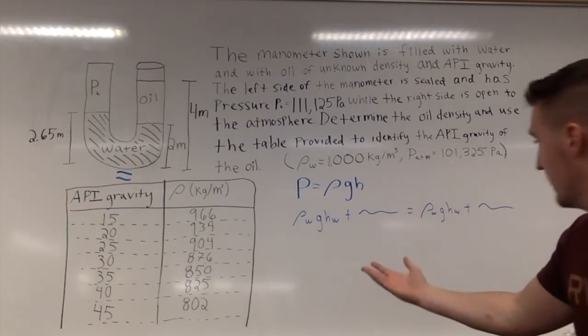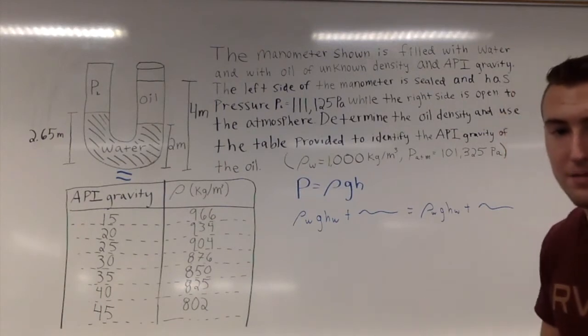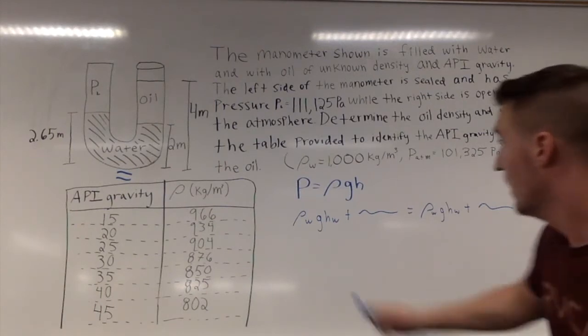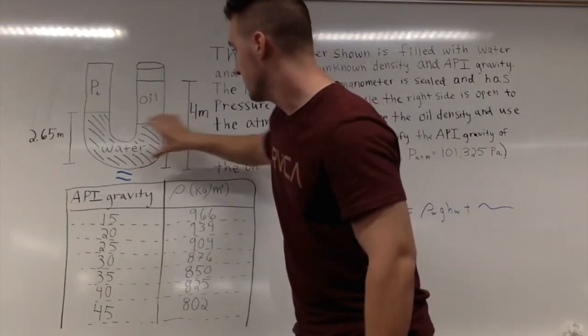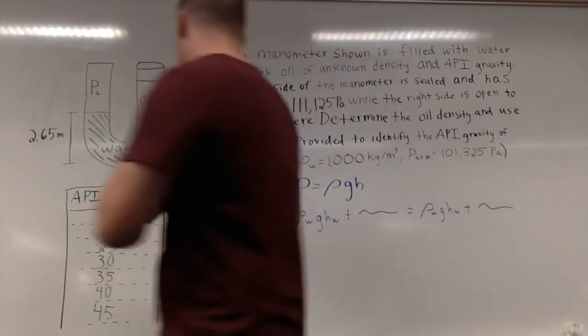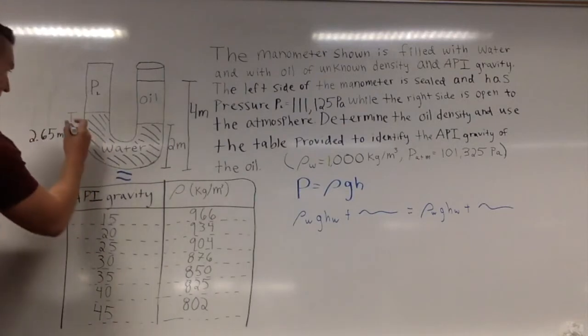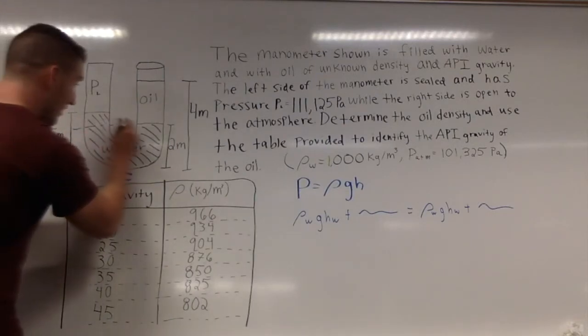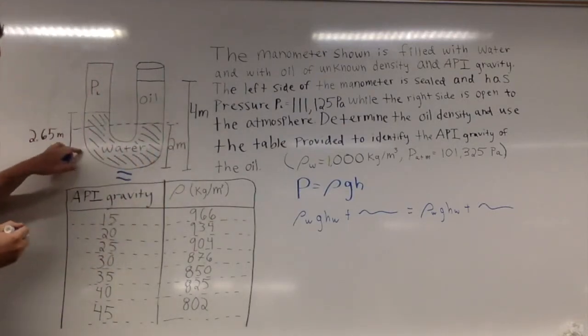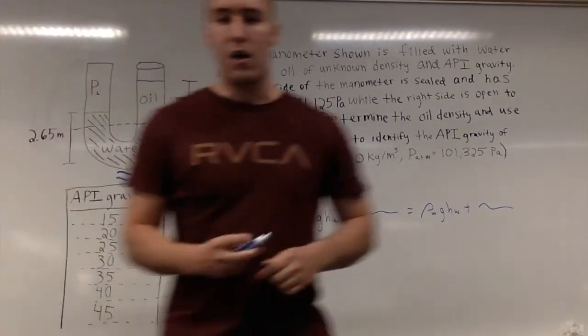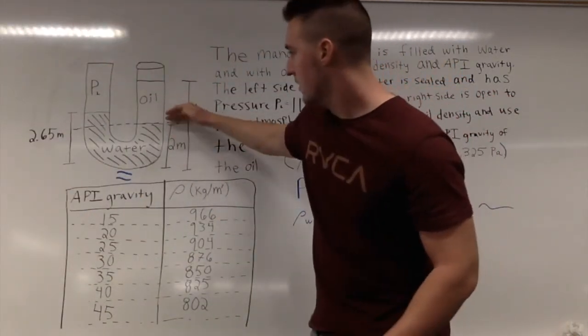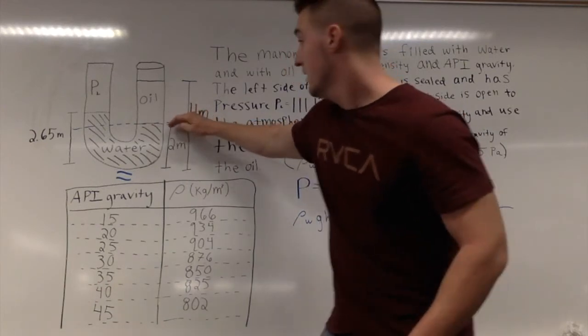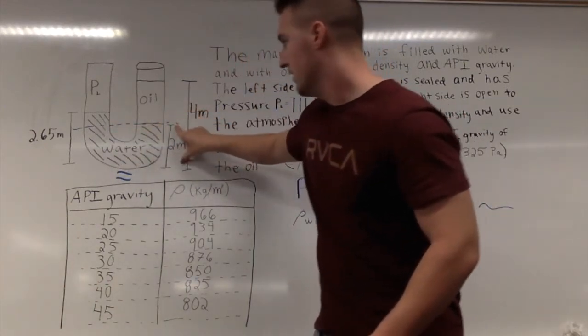I wouldn't recommend doing this every time; this is simply for demonstration purposes. Both sides have pressure due to water, but what we're going to do is set this essentially as our zero point. The reason we're going to do that is because everything below this line has equal pressure.